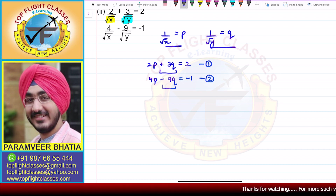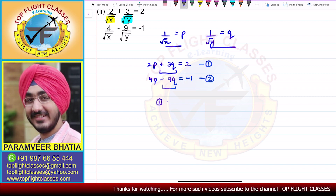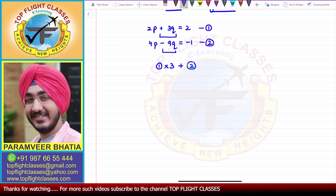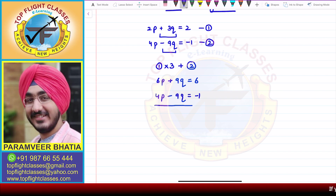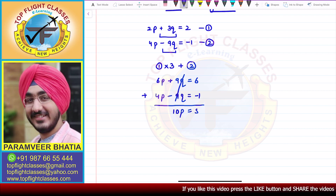We can see minus 9q and plus 3q, so we can eliminate q by multiplying the first equation by 3 and adding it to the second. This gives 6p plus 9q equals 6, added to 4p minus 9q equals minus 1. The q terms cancel, giving 10p equals 5.